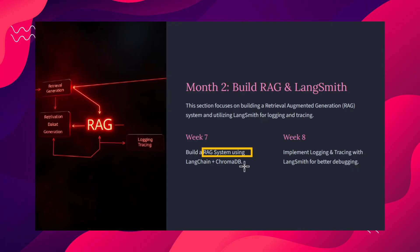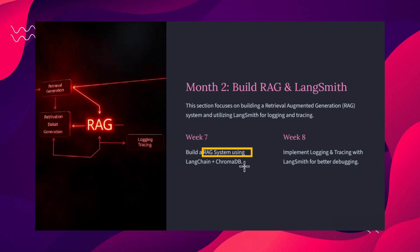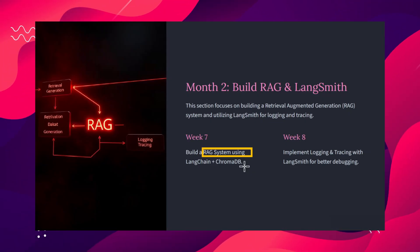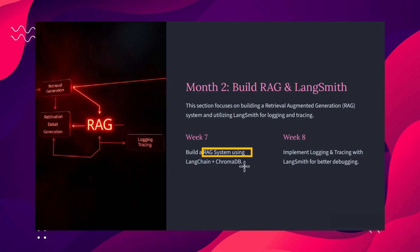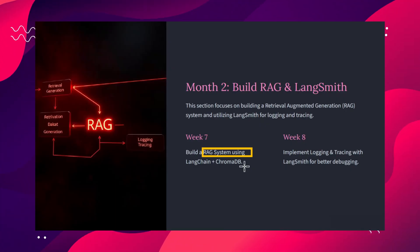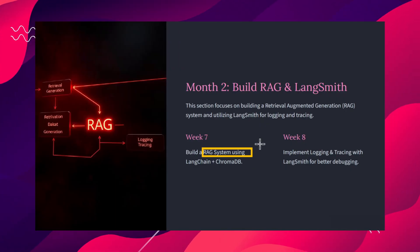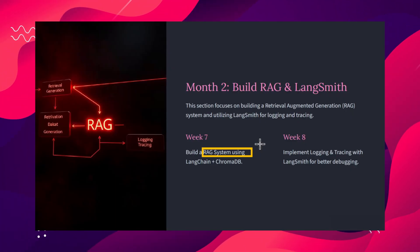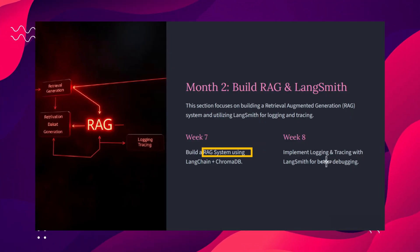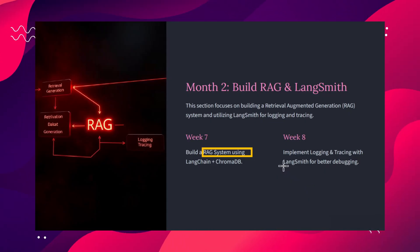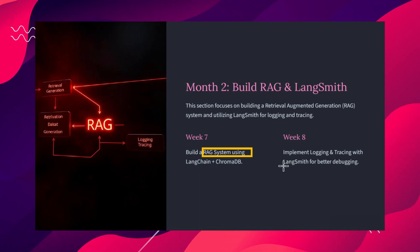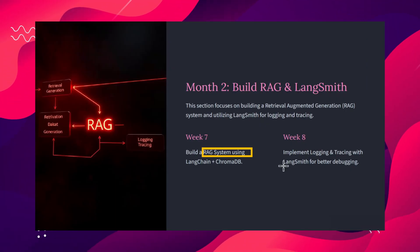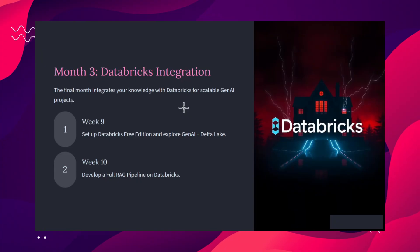Week seven covers the RAG system using LangChain or ChromaDB. We need to understand the RAG and LangChain framework, ChromaDB architecture, how to improve LLM accuracy, and the pros and cons of RAG versus pure LLM. I've already posted a video on building RAG with Databricks and LangChain — you can find it in the end card. You should be able to build RAG-enabled pipelines. Week eight covers LangSmith — a framework for logging and monitoring models — including tracing, error analysis, debugging, and how LangSmith fits into the GenAI stack.